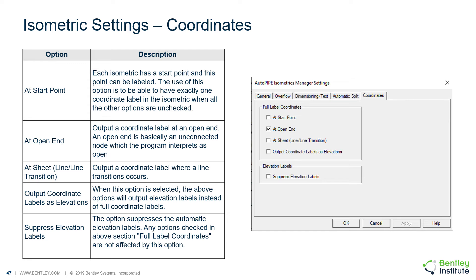Lastly, there's the coordinates tab of these settings, where there are options on where to place coordinates on the drawing. For full label coordinates, you can place them at the start point — every isometric is going to have a start point and this can be labeled. You can place it at an open end, which is an unconnected node that the program interprets as open. You can place the coordinates at sheet, which places a coordinate label anywhere a line transition occurs. Or you can select to output the coordinate labels as elevations, which applies to all three previous options but labels them as elevation labels rather than full coordinate labels. Down below, there's also an option to suppress the elevation labels, which suppresses the automatic elevation labels, but any options in the full label coordinate section are not affected.